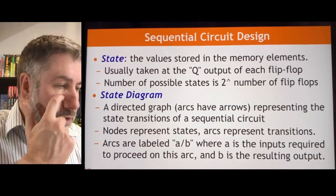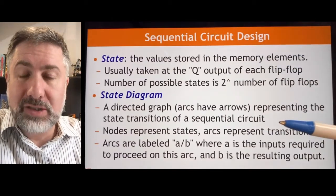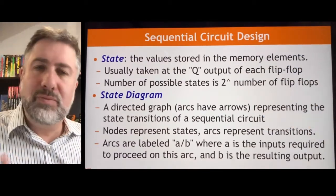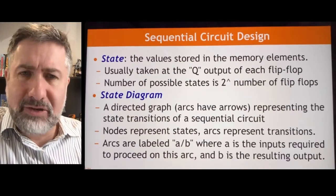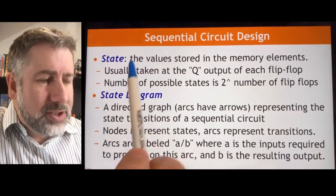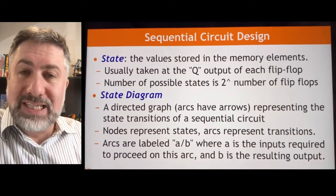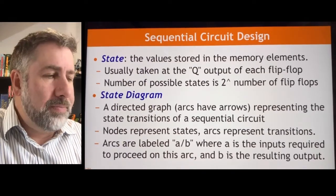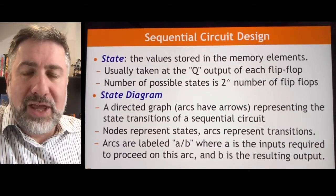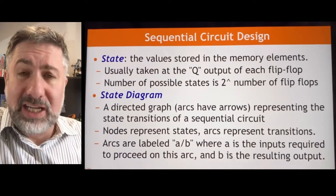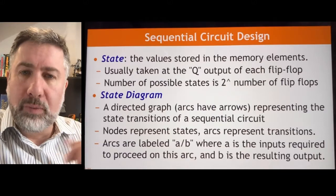We're going to talk about the information that's stored in one of these machines and how you get from storing one kind of information to storing a different piece of information. The state is the word we use for the total storage in that machine. So if there are two state variables — two flip-flops in this machine — then you would have four possible states. The flip-flops could be 00, 01, 10, and 11.